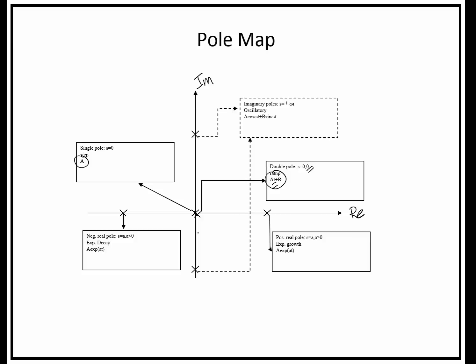Poles on the imaginary axis represent functions that are oscillatory, such as sine and cosine. Poles on the real axis represent exponential function. If we have a negative real pole, the exponential function is decaying. If you have a positive real pole, your function will be exponentially growing.